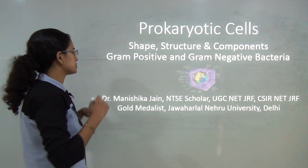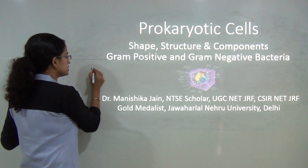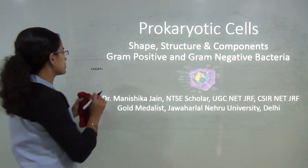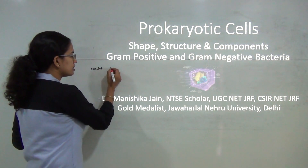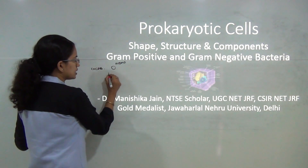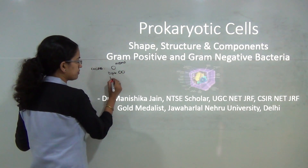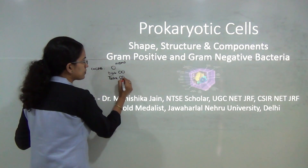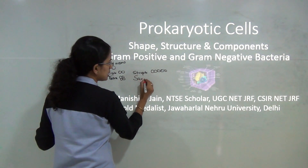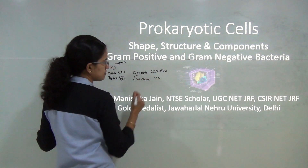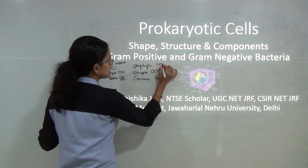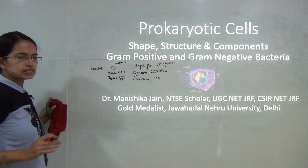Now let's first talk about the shapes. Shapes can be of various types. Let's start with the simplest ones — the coccus shape. The coccus shape means it is a sphere or oval in nature. Mono means single cell, diplo means two cells, tetra means four cells, strepto means a chain arrangement, sarcina means a three-dimensional arrangement of the cells, and staphylococcus means there is an irregular arrangement of the oval cells.